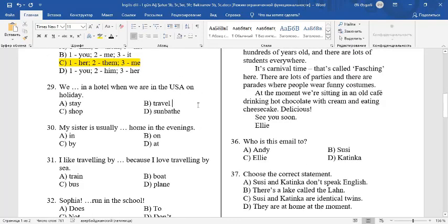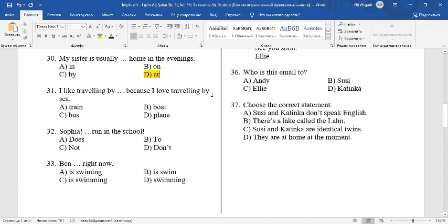29. We in a hotel when we are in the USA on holiday. You can say we stay in a hotel. The answer is A. 30. My sister is usually home in the evenings. Before home, you can use at. My sister is usually at home in the evenings. 31. I like traveling by because I love traveling by sea. The answer is B. I like traveling by boat.